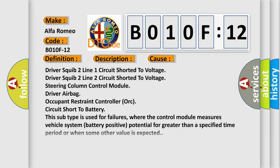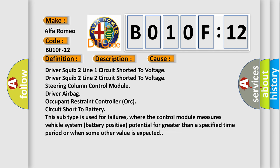This diagnostic error occurs most often in these cases: driver squib 2 line 1 circuit shorted to voltage, driver squib 2 line 2 circuit shorted to voltage, steering column control module driver airbag, occupant restraint controller (ORC), circuit short to battery.